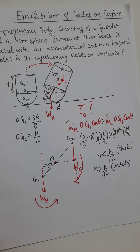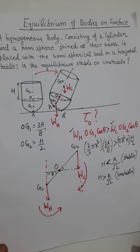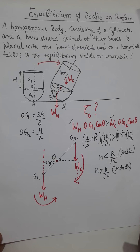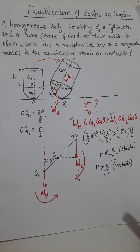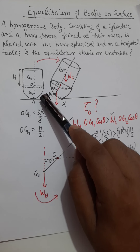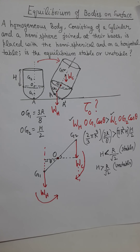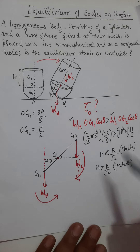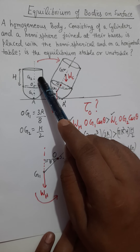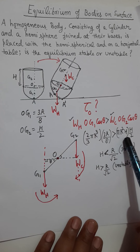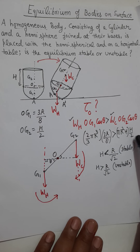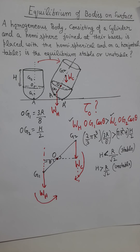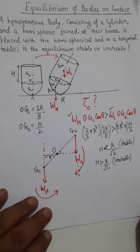Now I will apply the same argument for the question which was in the exam paper. In the actual question, there was a hemisphere, but in place of the cylinder, there was a conical object. The principle for solving the question is similar — the only difference is that the volume parameter and the corresponding center of gravity will change. So I will solve that question also.